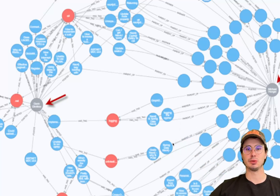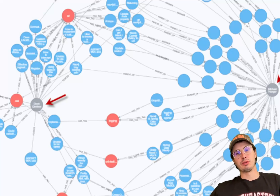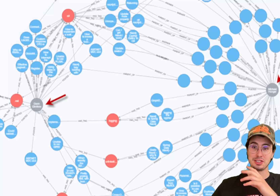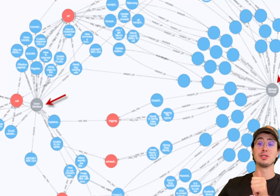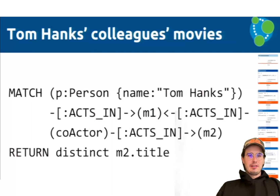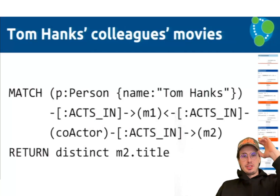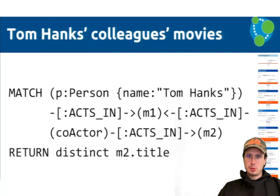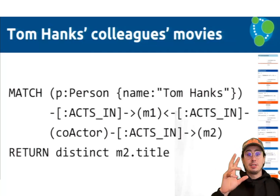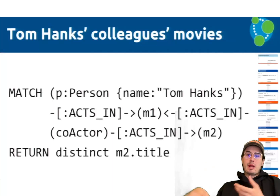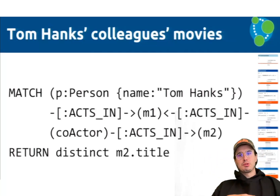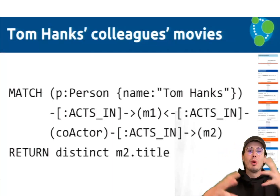You also have properties, which are key-value pairs associated with nodes and relationships that store relevant information. What makes Neo4j unique is its use of the Cypher query language, which is an important concept to understand. Cypher is a really powerful and expressive query language specifically tailored for graph databases. It allows you to specify patterns in graphs and perform complex queries with ease — it's a bit like SQL, but more optimized for graph traversal and the nuances there.